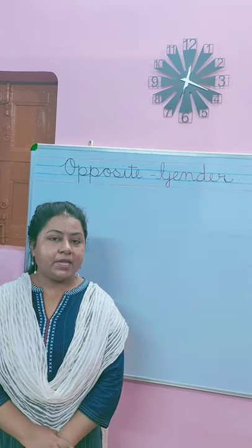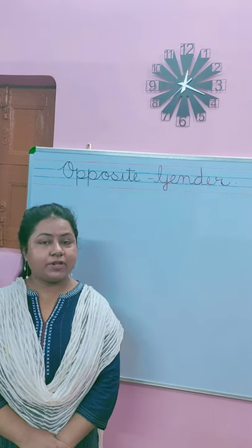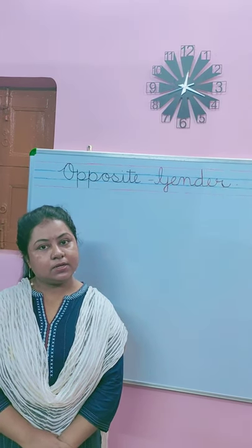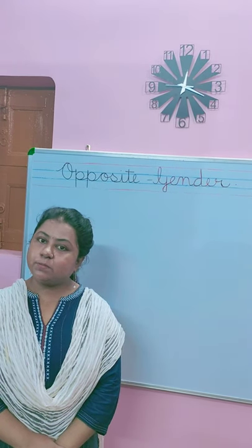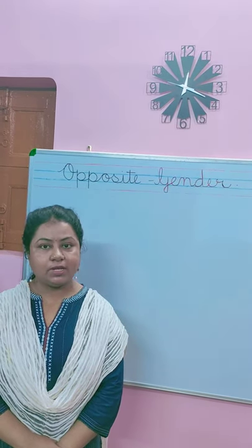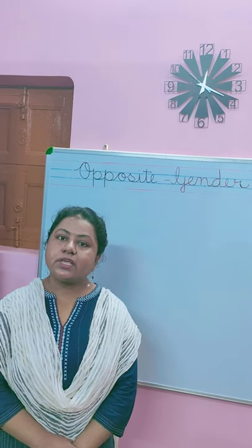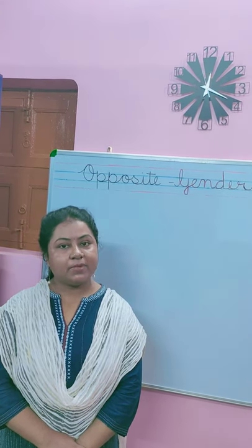Remember children, first semester I taught you the use of he and she — he for male gender and she for female gender. He, for example boy, and she, for example girl. So children, gender is of two types: male gender and female gender. Male gender is also known as masculine and female gender is also known as feminine.